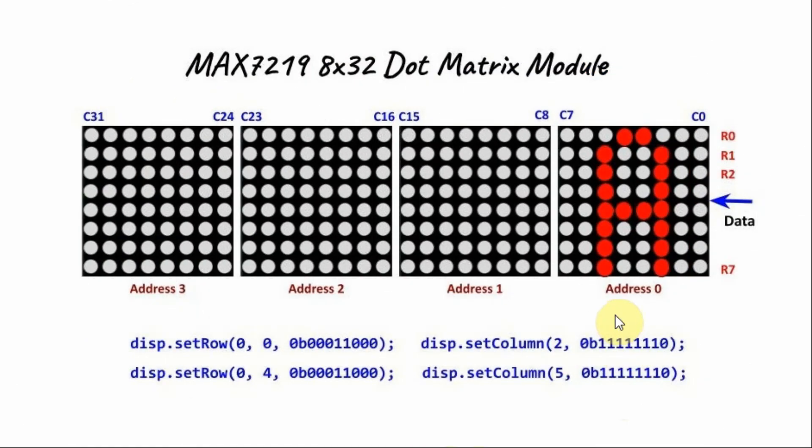Let's have a look at this example here. Let's say we want to sketch the letter A on the module. So we can think of this as two row patterns and two columns. So the instruction for the first row would be setRow at address 0, at row position 0, and the binary value starting from the most significant bit 0 0 0 1 1 0 0 0, which is this value here.